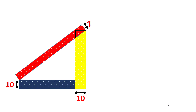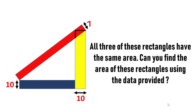Welcome back to Simply Logical. This is Vintage. In this video I am going to present you an interesting geometry puzzle. In this diagram, all three rectangles have the same area. Can you find the area of these rectangles using the data provided? There are three rectangles and the area of all these rectangles is the same. Your task is to find the area of the rectangles.